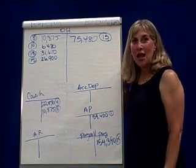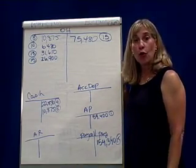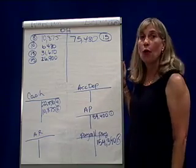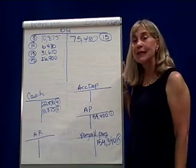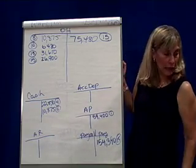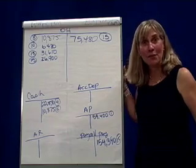In managerial accounting, we're talking about job order costing, in particular problem P-6. And we are on the 22nd of September.